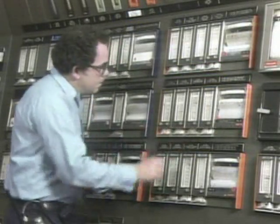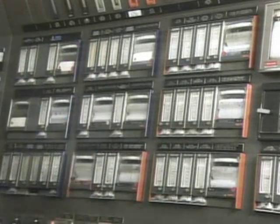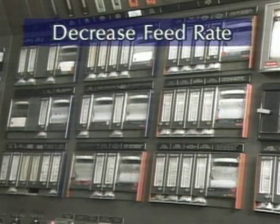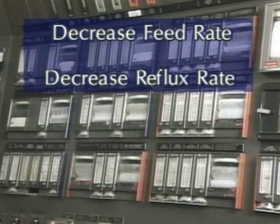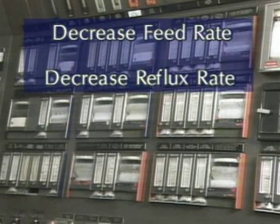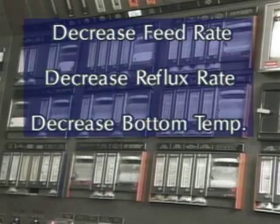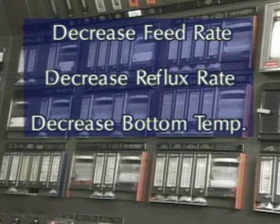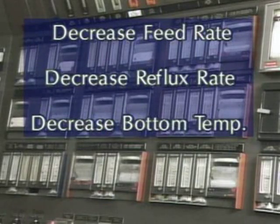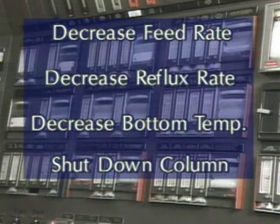Some of the more common methods used to eliminate a flooding problem involve temporarily decreasing the feed rate, the reflux rate, or both, to reduce the amount of liquid in the column, and decreasing the bottom temperature to reduce the flow rate of vapor up the column. In extreme cases, it may even be necessary to shut down the column so that the problem can be corrected.